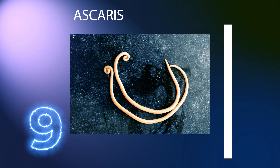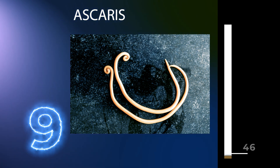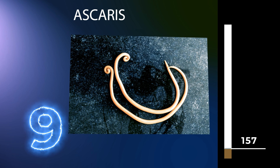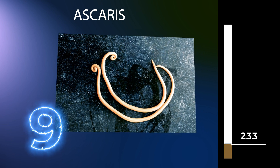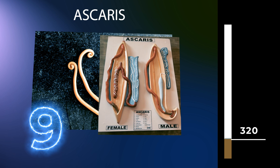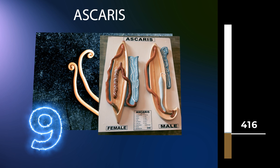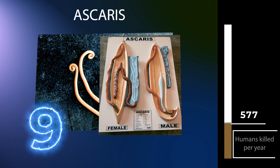Ascaris is a nematode genus of parasitic worms known as the small intestinal roundworms, which is a type of parasitic worm. One species, Ascaris lumbricoides, affects humans and causes the disease ascariasis. Another species, Ascaris suum, typically infects pigs.